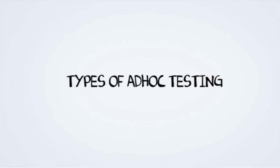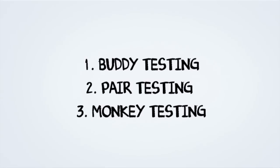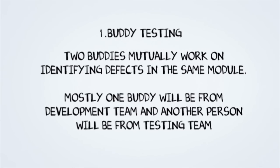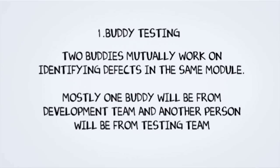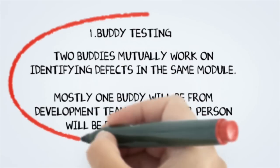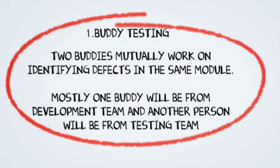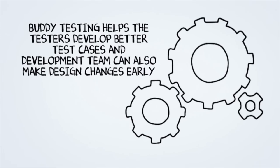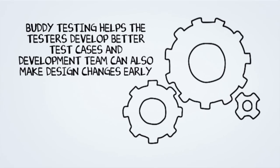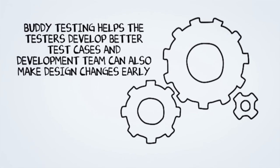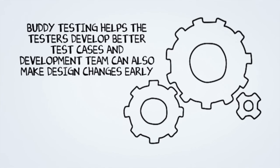Types of Ad-Hoc Testing — Buddy Testing: Two buddies mutually work on identifying defects in the same module. Mostly, one buddy will be from the development team while another person will be from the testing team. Buddy testing helps the tester develop better test cases and the development team can make design changes early. This testing usually happens after unit test completion.